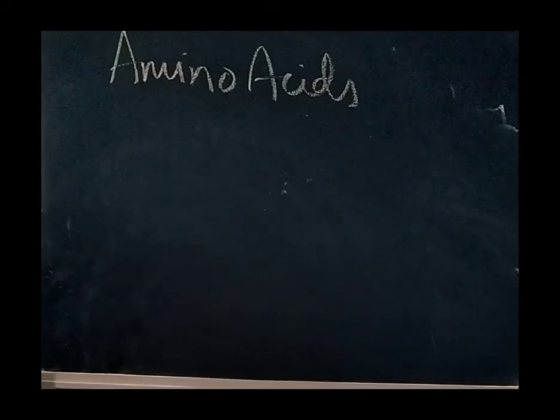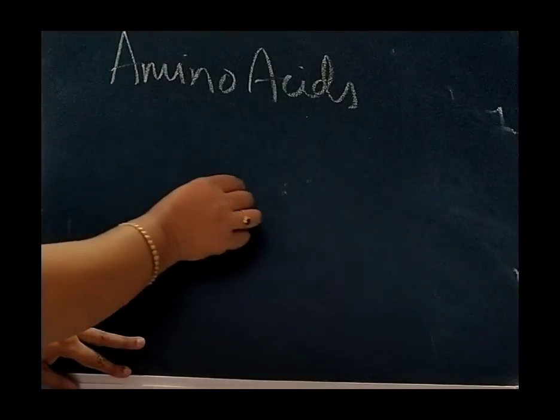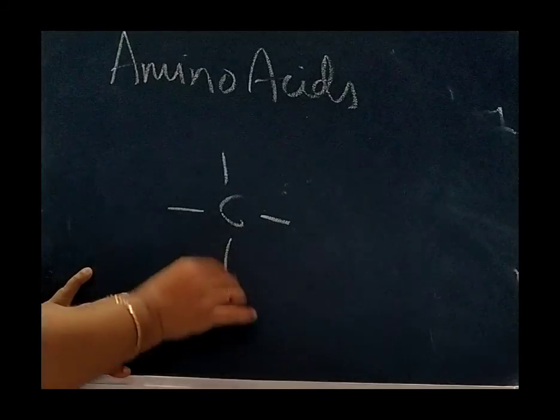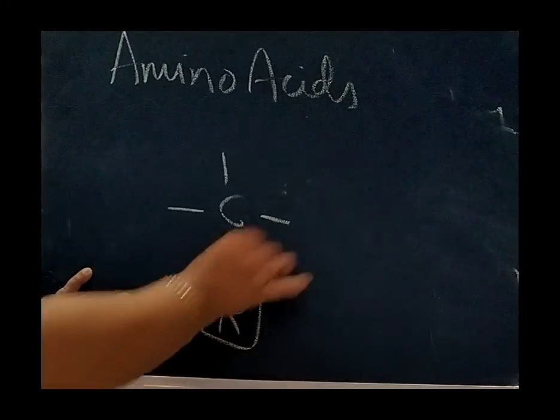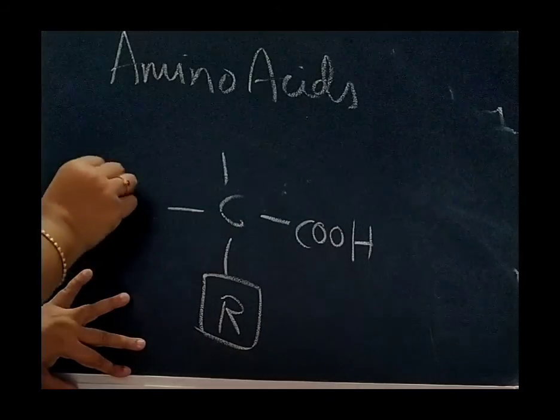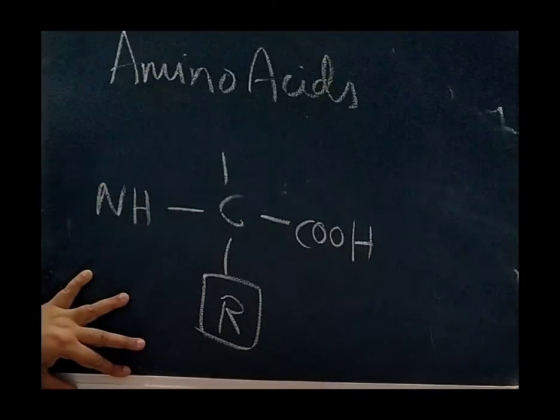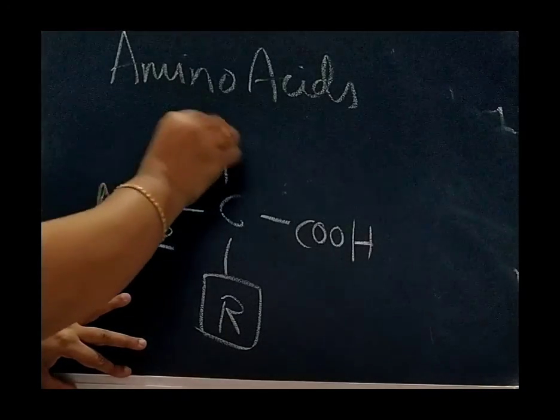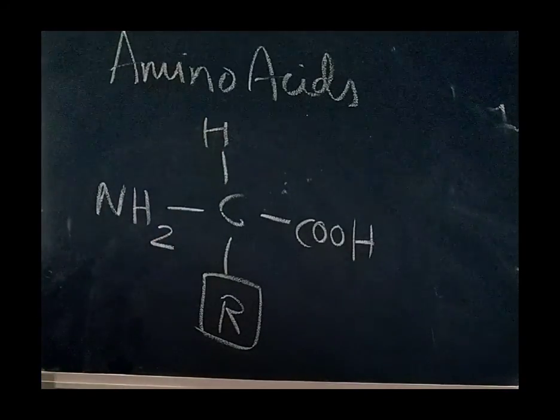Alpha carbon also bears a hydrogen and a variable group. So what is the general structure of amino acid? The general structure is R which is a variable component, a carboxyl group, NH2 amino group, and hydrogen. This is the amino acid general structure.